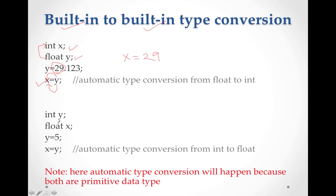Taking the opposite example: if int y = 5 and float x, and we assign x = y — converting integer to float — the compiler will simply print 5.0, giving you the value in fractional pattern. This is also automatic type conversion from int to float.